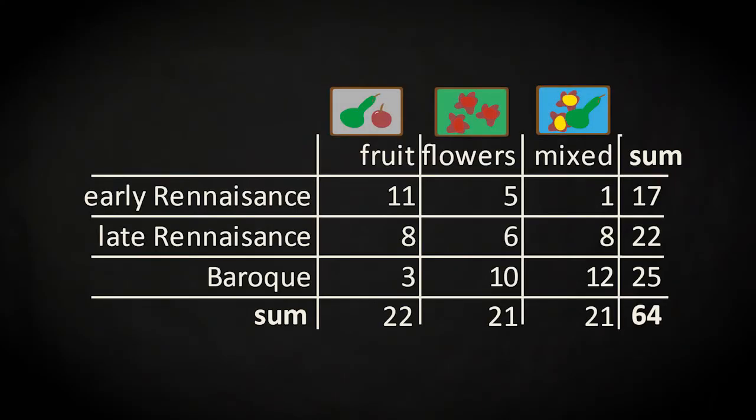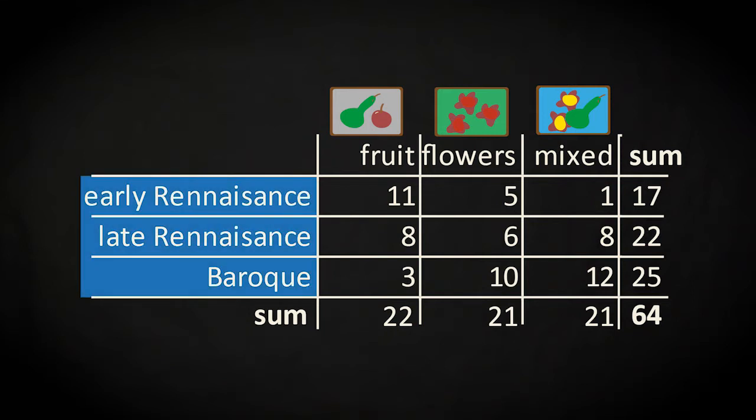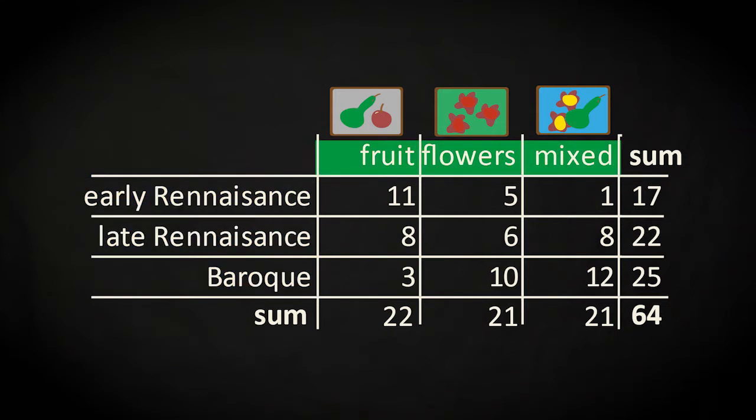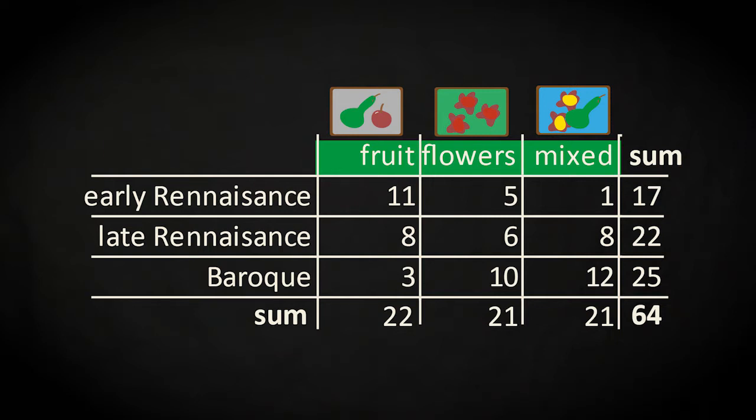Let's look at this table. It represents counts based on a random sample of still-life paintings from three art periods. The variables are the period for which a painting was created, and the type of object that was being painted. The question for which this table was created was to see whether different objects were being painted in different art periods, or stated differently, whether the type of object and art period were independent.